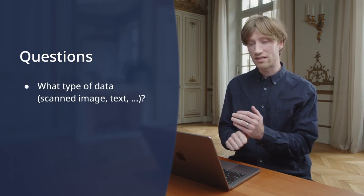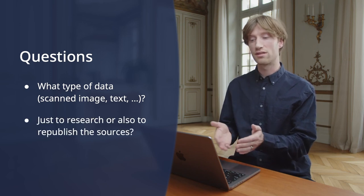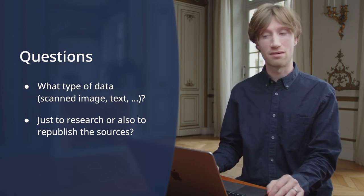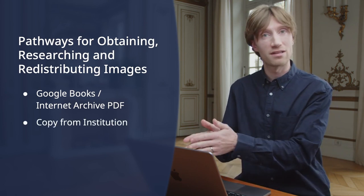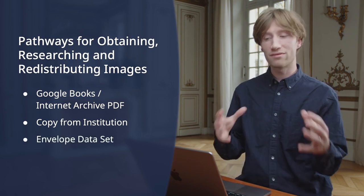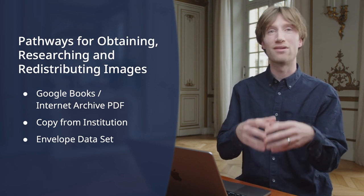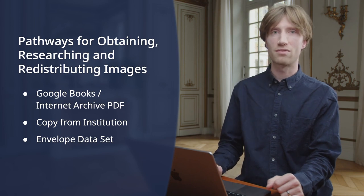To sum up, the relevant questions that you need to ask prior to using Google Books or Internet Archive sources are: what type of data you need from the PDF — text, paratext, or digital object — and whether you are planning to research the sources or republish them, for example as part of training data for other ATR projects. Depending on your objectives, you may be satisfied with using the Google Books document directly, obtaining a permissive license from the partner CHI, or creating an envelope dataset that doesn't contain the copyrighted digital object itself but enriches it with quality annotation such as transcriptions, and only references the copyrighted digital object.